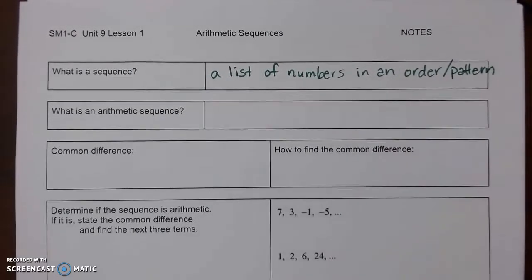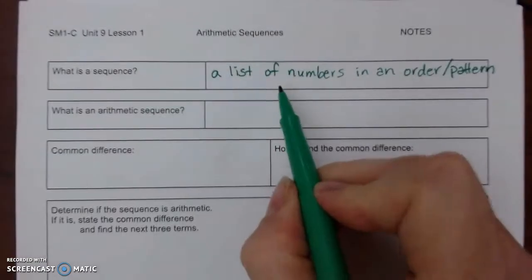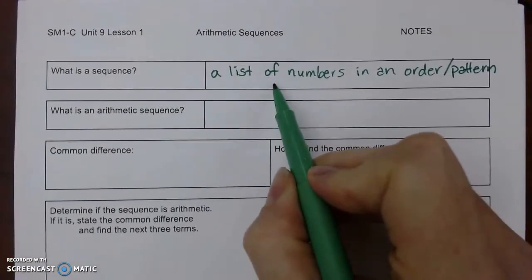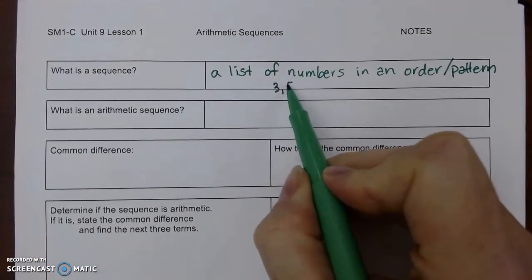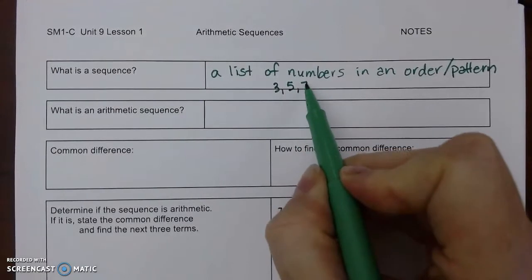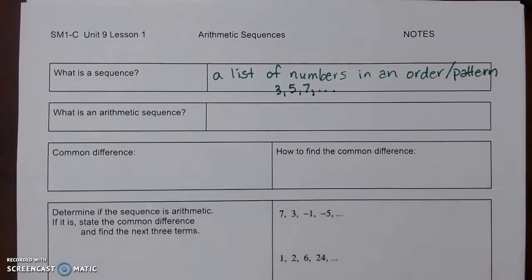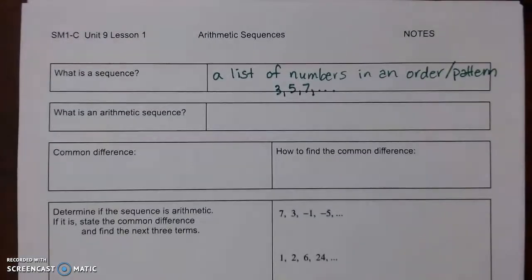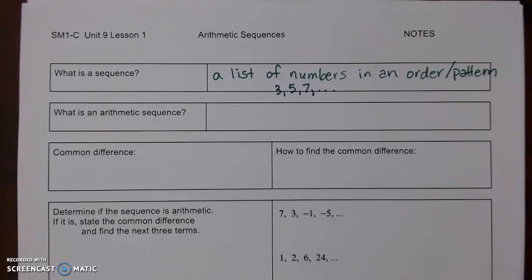You might see the first numbers be like 3, 5, 7, and you'll see a dot-dot-dot to show you that the sequence continues.